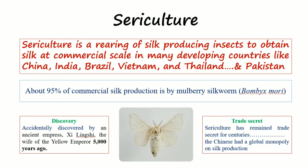In this video we will talk about the various types of silk. First of all, we will have an overview of sericulture. Sericulture is basically the rearing of silk-producing insects, that is the silkworm, to obtain silk at a commercial scale. It has been performed in many developing countries including India, China, Vietnam, Brazil,